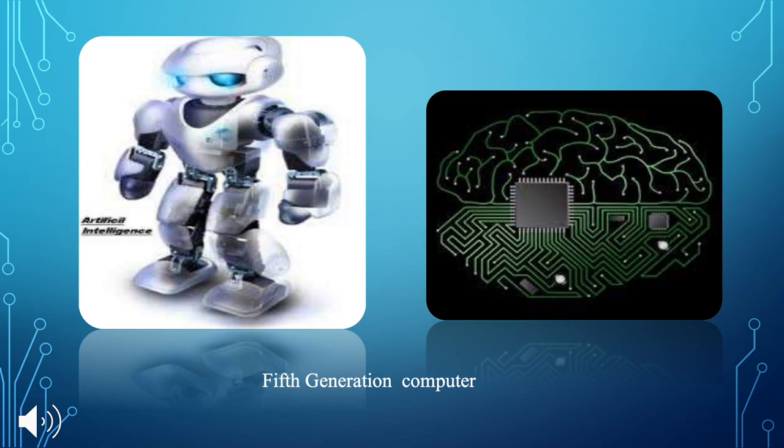As you can see, in the fifth generation, robots can control all things, and maybe they can think like a human.